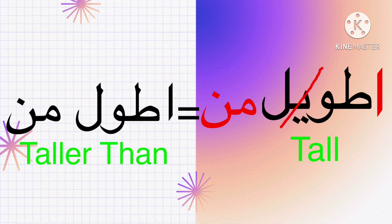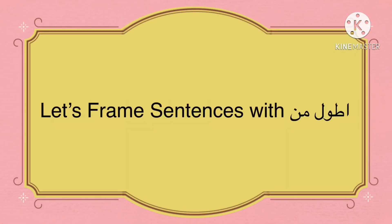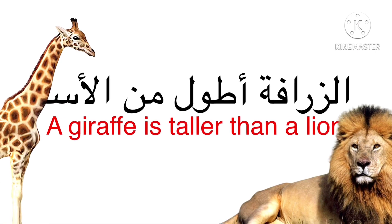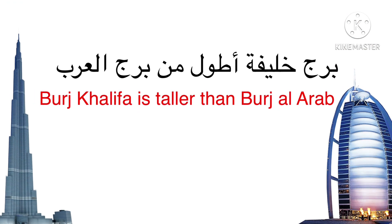Now let's make some sentences. A giraffe is taller than a lion — here you can see 'akibar min' as the comparison. Our second sentence: Burj Khalifa 'akibar min' Burj Al-Arab — Burj Khalifa is taller than Burj Al-Arab. Here also you can see the comparison.